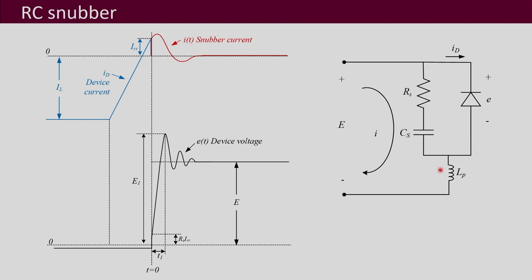To refresh your memory, this is the base circuit and the basic waveforms using which we had done the analysis and are doing the design. This peak voltage E1 can be limited by RC snubber design, and limiting the rate of change of voltage dv/dt is also one of the objectives. The parasitic LP is assumed to be known, and the reverse recovery current is also something we have an idea of — both are assumed for this RC snubber design.